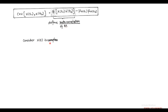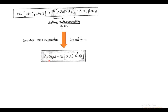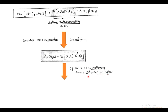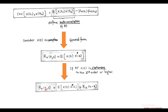In the case of a complex random variable X(t), the autocorrelation can be written in general form as R(t, s) equals expectation of X(t) into X*(s), where X* is the complex conjugate function. Also, if random process X(t) is stationary with second order or higher order, the autocorrelation function R(t, s) equals R(t minus s).